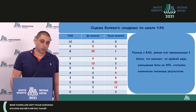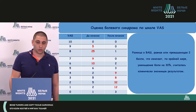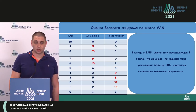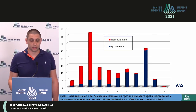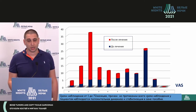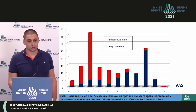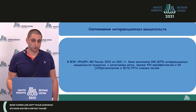Pain was assessed by VAS scale before and after treatment. The difference was over two scores, representing 30% difference, which was clinically significant. The follow-up period ranged from one to 72 months. Throughout the entire follow-up period, we marked positive dynamics and stabilization in the area of oncological orthopedic surgery with correction of pain.